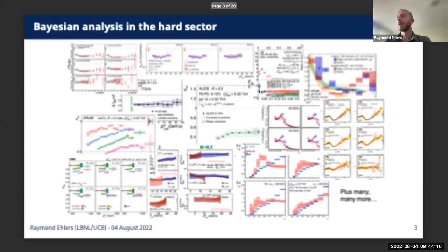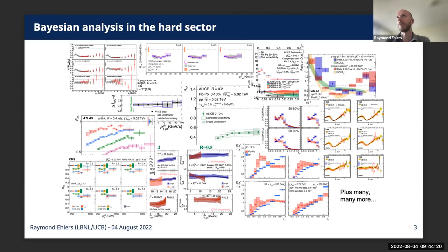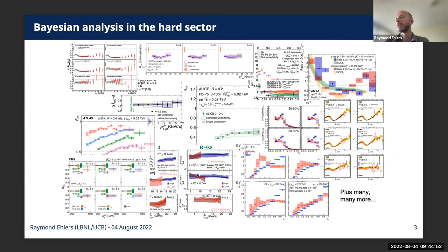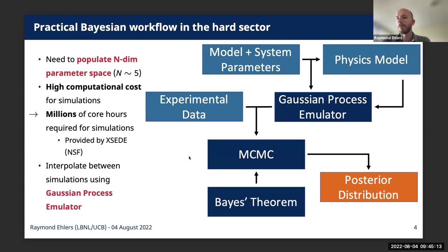There's a broad collection of results — RAA but also many variations up to including substructure, dijet asymmetries, unfolded and non-unfolded jet measurements, and more. We can ask how we try to make sense of these in the hard sector — unsurprisingly I suggest we should try Bayesian analyses to extract coherent information. In the hard sector our problems are a little bit different: we tend to have a smaller parameter space, on the order of five to seven parameters compared to say the 16 parameters seen yesterday.